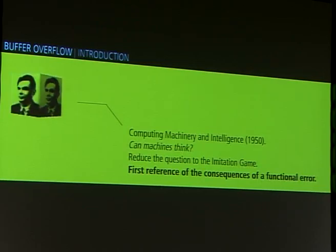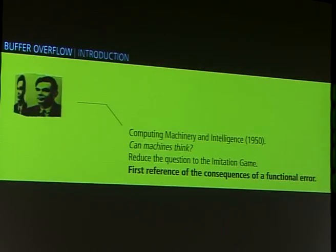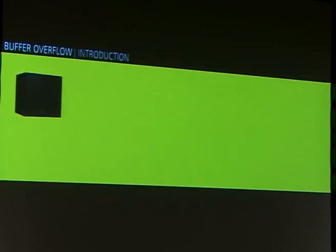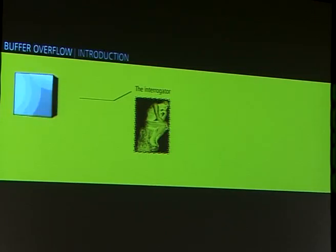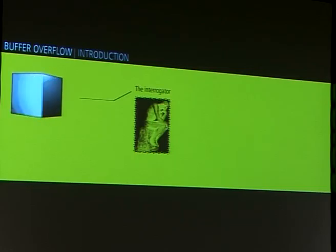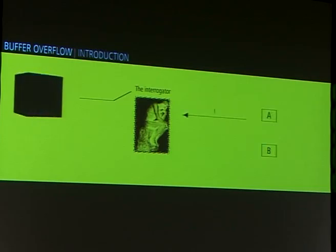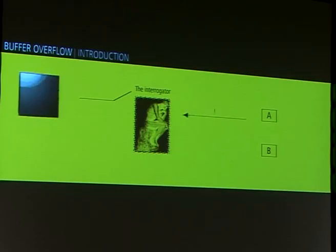In fact, Alan Turing was, for me, the first reference of consequences of a functional error. In a paper, 'Computing Machinery and Intelligence', published in 1950, he tried to answer the question: can machines think? He reduced this problem to a game, the imitation game. It's a very simple game, now famous due to CAPTCHA. For example, when you create an account on Hotmail, you have a small number, strange-looking, and you have to rewrite it — just to make the difference between a human and a script, a computer.